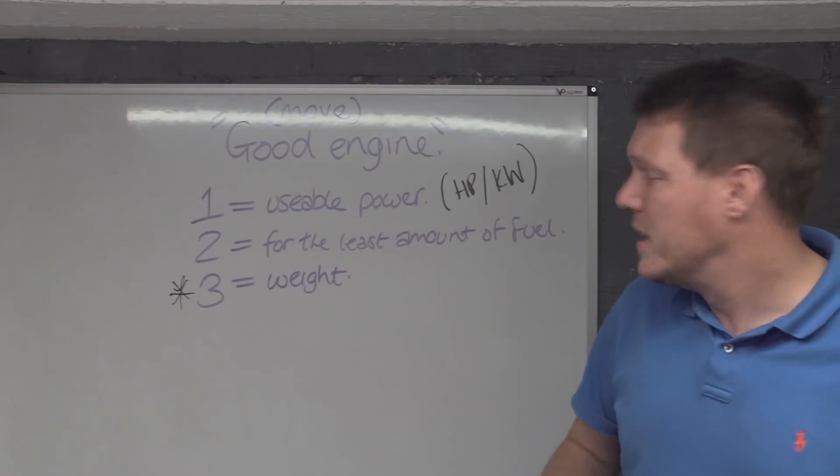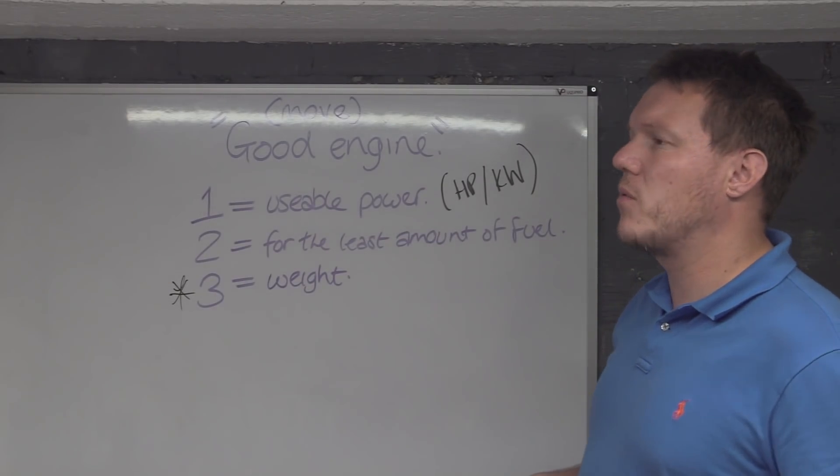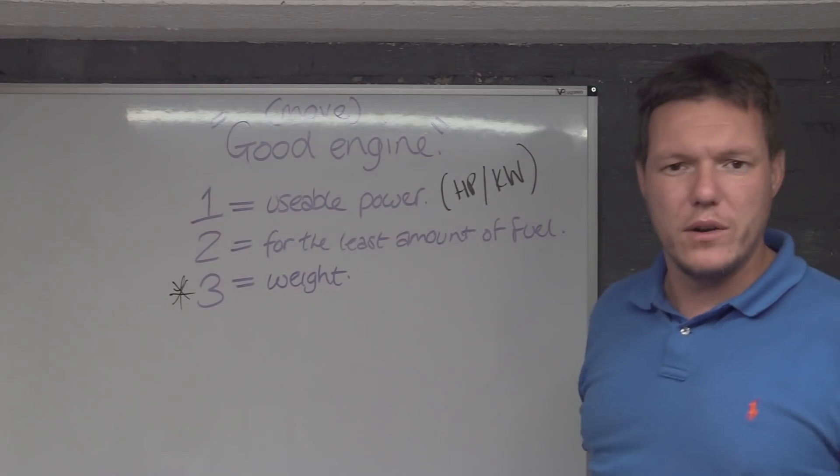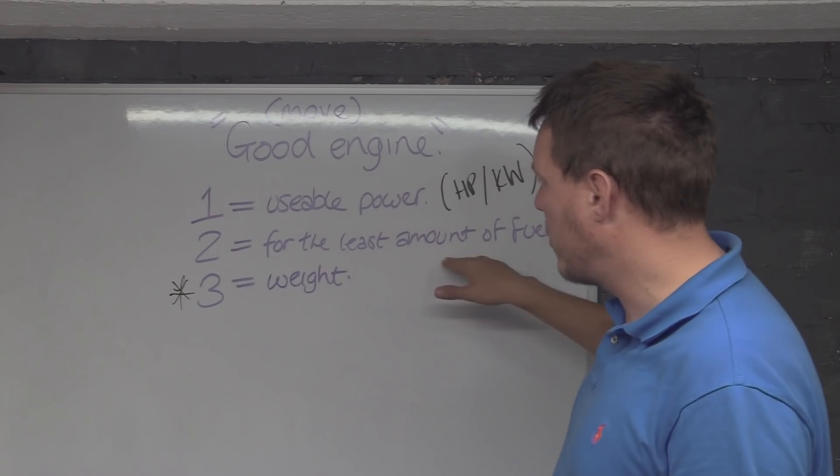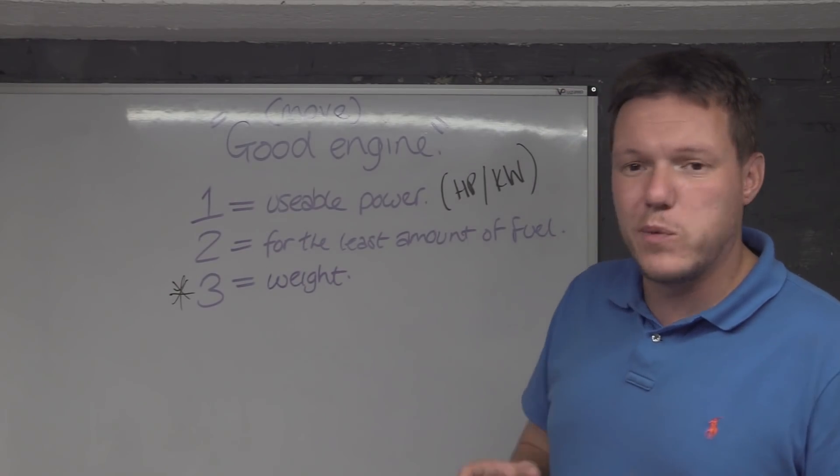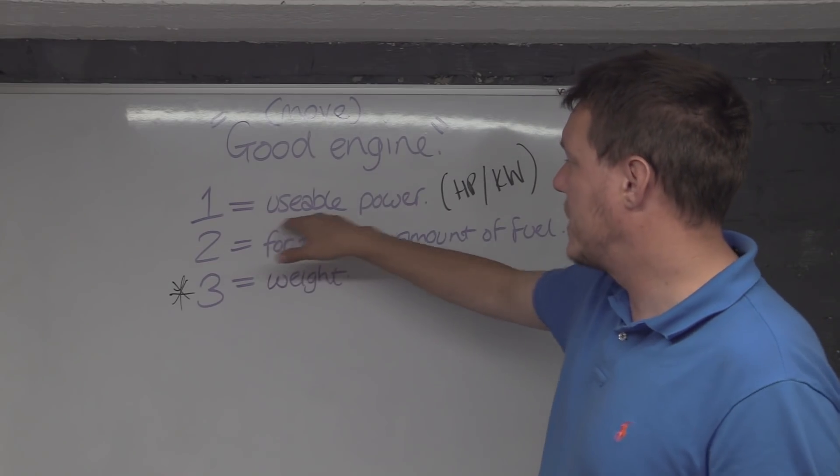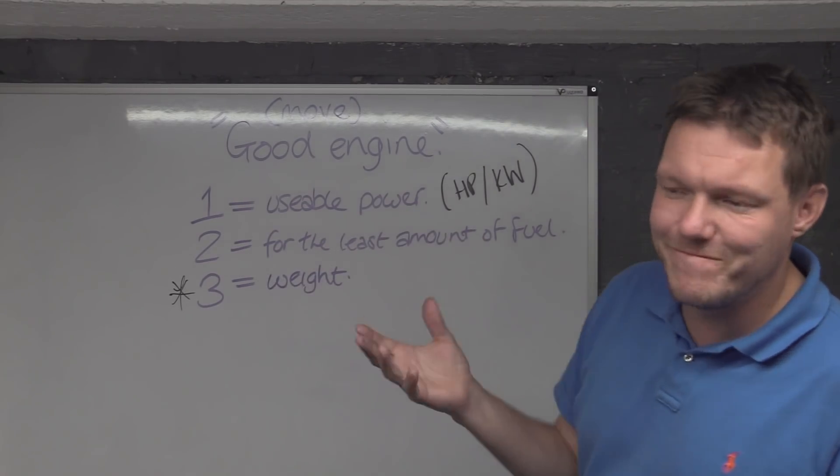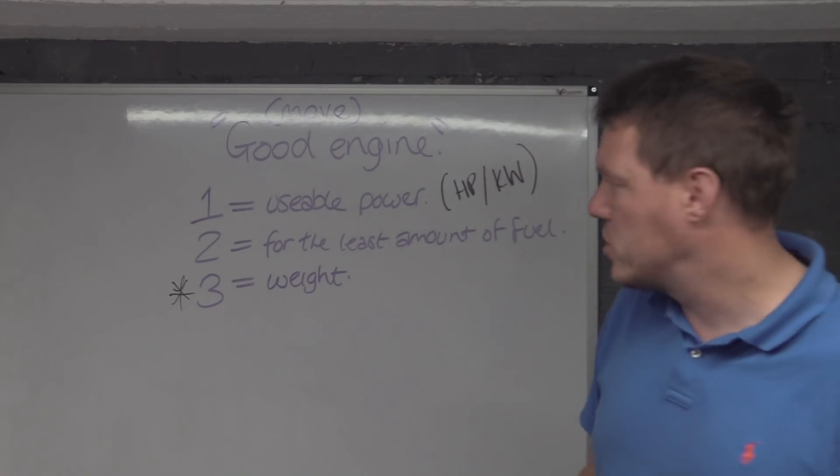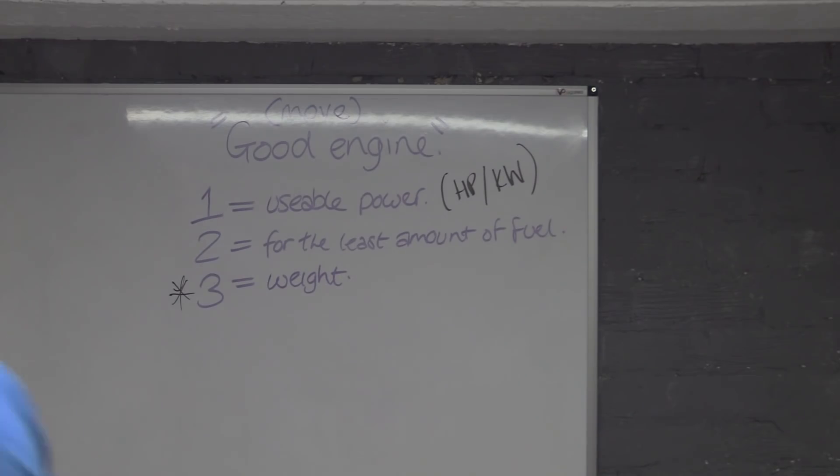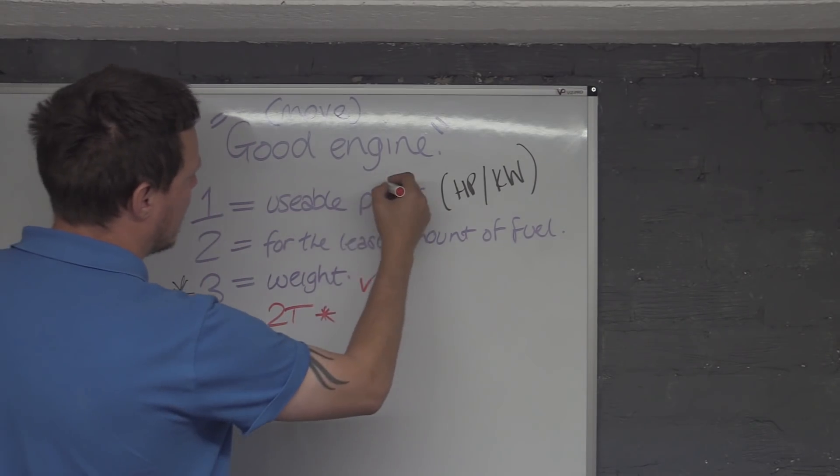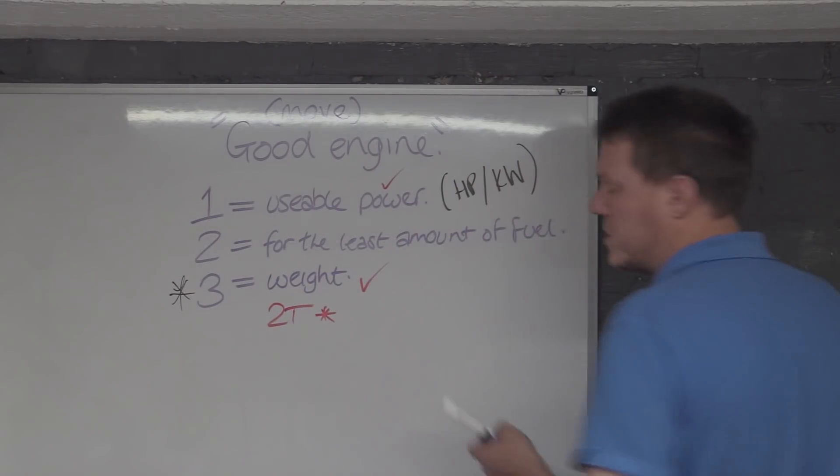Once we get into this vehicle, this moving side of things, then weight becomes a consideration. There is no point having an engine, let's choose that massive ship engine with like half a million horsepower. It's got loads of usable power and it uses little fuel for every horsepower that it makes, but its weight is incredible. This is what made two strokes really good, is because they can make a lot of usable power. Fuel, that was the bad thing, not just the emissions, just the fact that it is banging every other stroke basically. And it was lightweight.